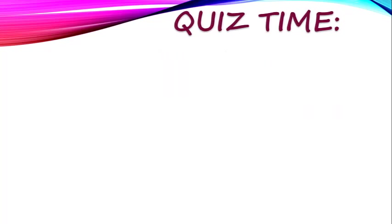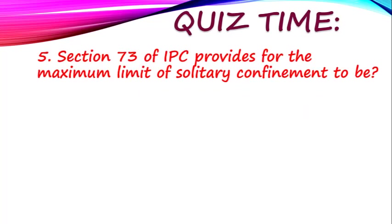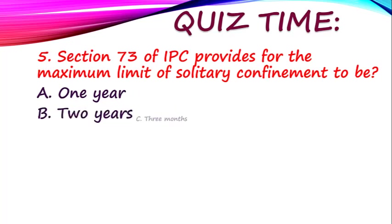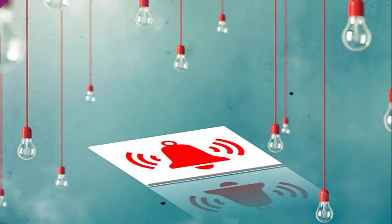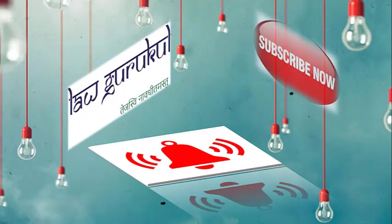Last question: Section 73 of IPC provides for the maximum limit of solitary confinement to be — what is the maximum limit of solitary confinement under Section 73? Is it one year, two years, three months, or six months? If you have watched this video carefully, I am sure you will be able to answer all five questions correctly. Comment your answers below, subscribe the channel and press the bell icon so you don't miss any lecture. Thanks!